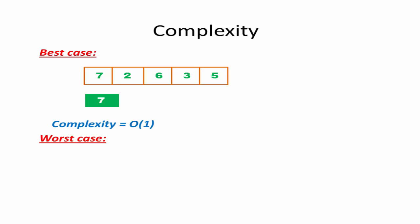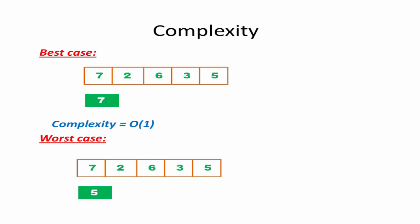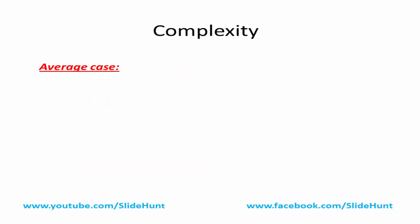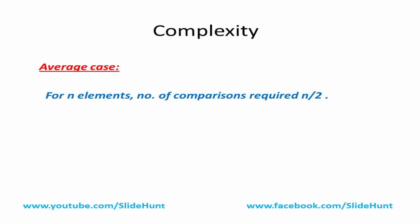In the worst case the item is at the end of the array. For example, searching for 5 requires 5 comparisons. So if the array has N elements we require N comparisons, making the worst case complexity O(N). In the average case the item can be at any position, and on average we require approximately N/2 comparisons. So the average case complexity is also O(N).